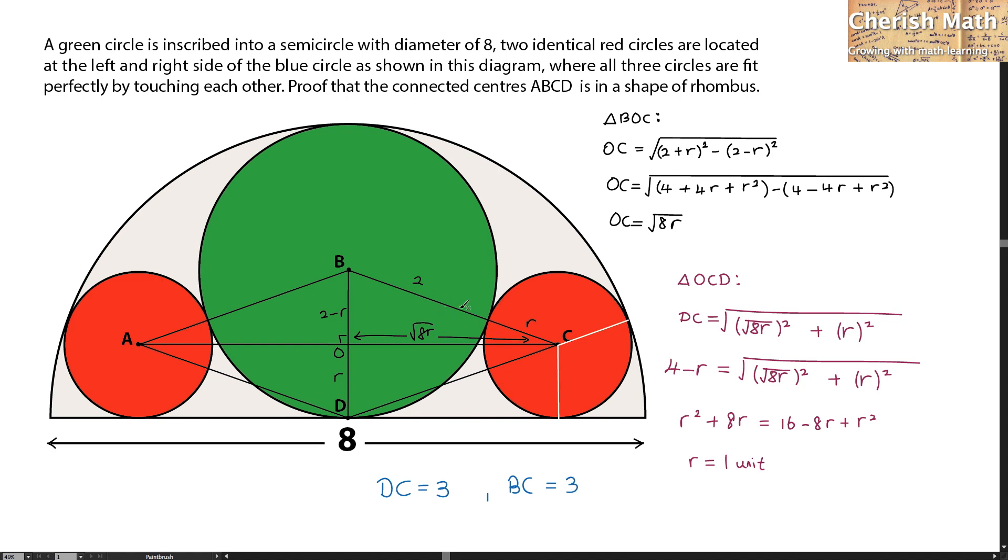For the conclusion, I know that BC and DC are the same length. The same process applies for AB and AD as well. I have proved that ABCD is in the shape of a rhombus. We solved the puzzle.